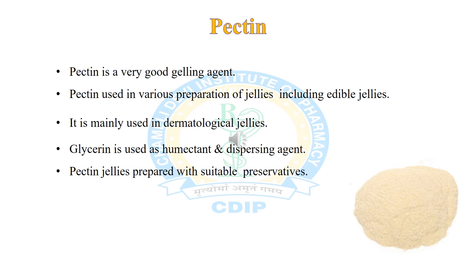Pectin is a valuable gelling agent for acid products and is used in the preparation of jellies including edible jellies. Pectin is mainly used in dermatological jellies, with glycerine used as a humectant and dispersing agent. Pectin jellies are prone to microbial growth, so a suitable preservative is needed during storage.